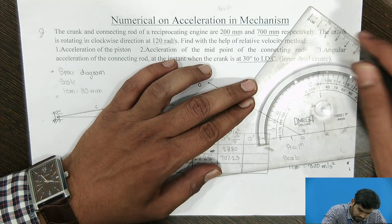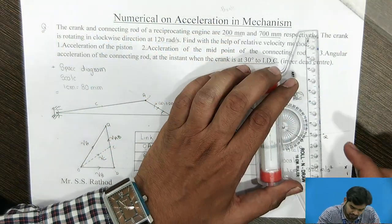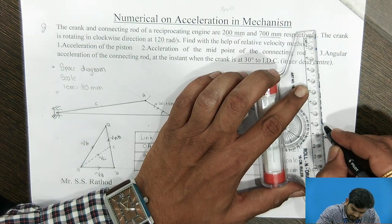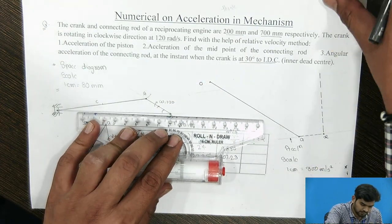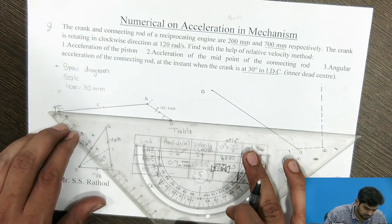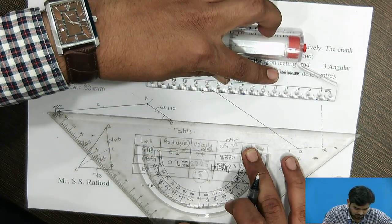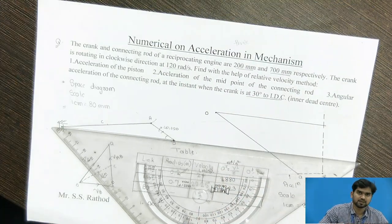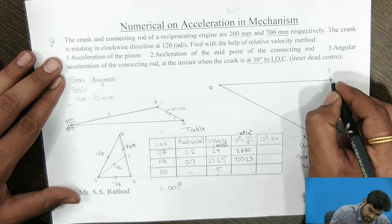From the end of the radial component, we draw a perpendicular line for the tangential component of AB. Since the slider B moves in the horizontal direction, we draw a parallel line to the slider from the fixed point. The intersecting point gives the position of slider B.